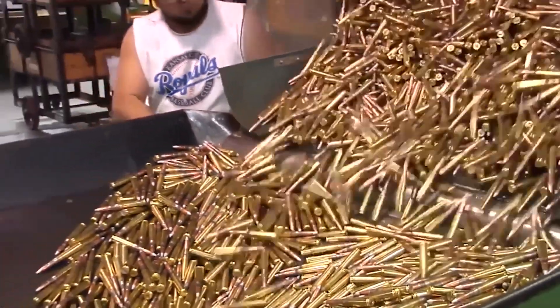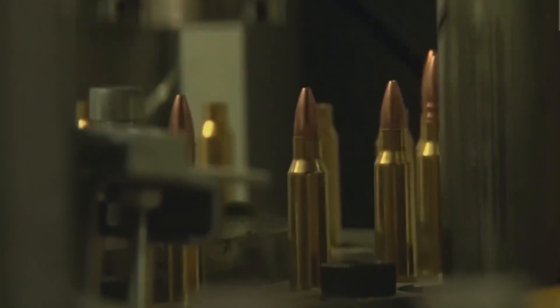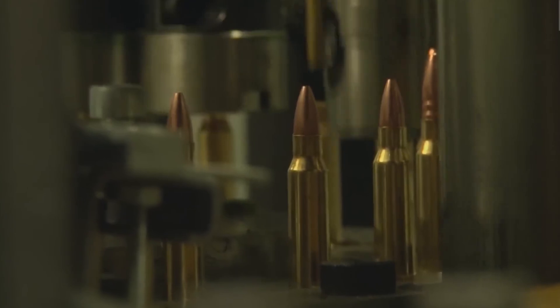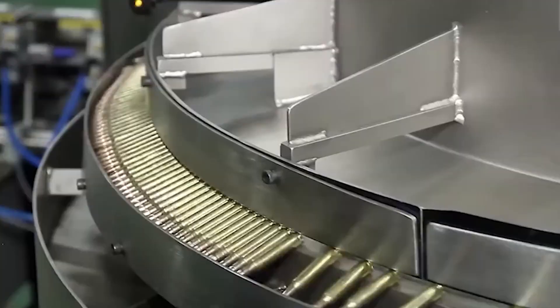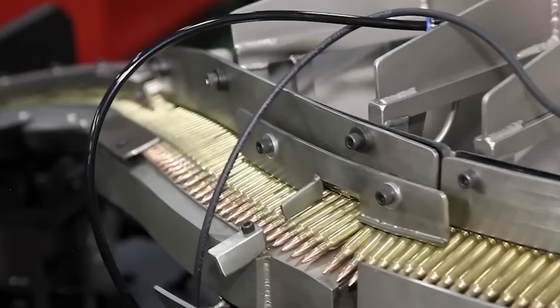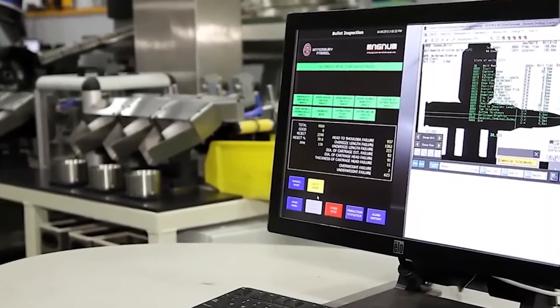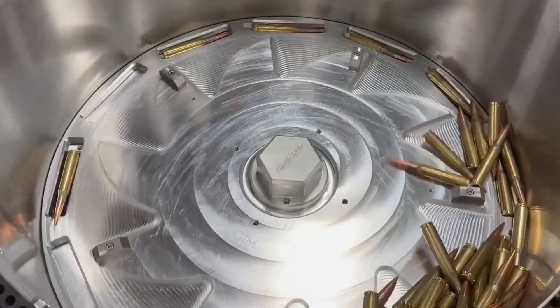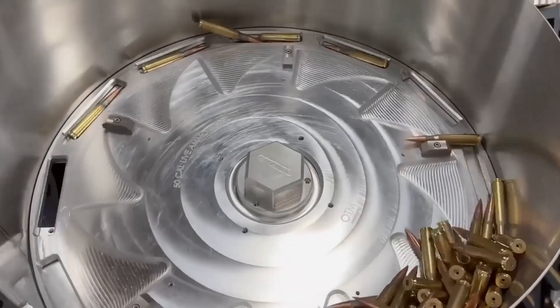At Lake City Army Ammunition Plant in Independence, Missouri, the U.S. military's primary small arms ammunition facility, production lines can manufacture over 4 million rounds of 5.56 mm ammunition per day during peak operations.